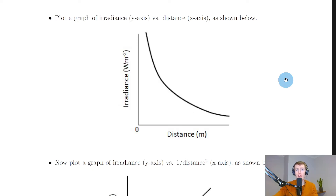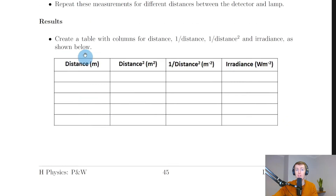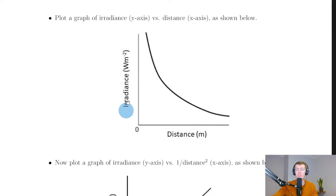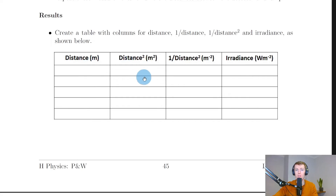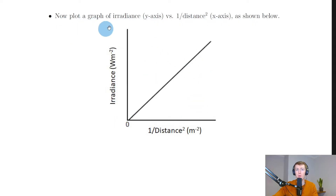Plot a graph of irradiance against distance using the first and last columns of the table, with irradiance on the y-axis and distance on the x-axis. You should get an exponentially decaying curve — this is an inversely proportional relationship, showing that as distance from the point source increases, irradiance decreases. However, in Higher Physics we often prefer straight lines, so we need to linearise the data using the extra columns.